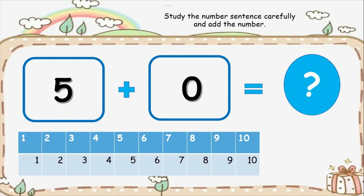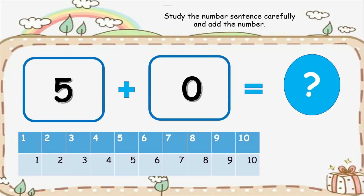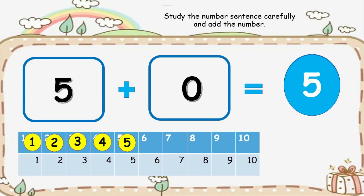Let's do it one more time. Five plus zero equals — now we have five, so let's make five dots. Count. On the other frame, we have zero. Are we going to put a dot on this frame? No, because zero is nothing, so we are not going to write anything on our number frame. How many dots do we have in all? One, two, three, four, five. We can say that five plus zero equals five.